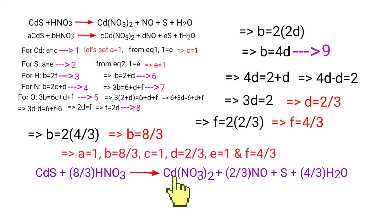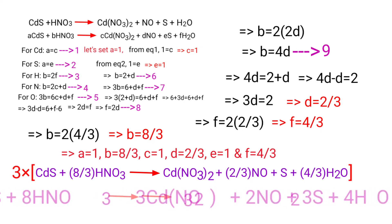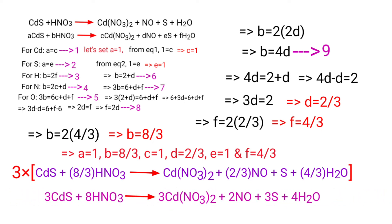The equation is now balanced. Multiply through by 3 to get whole number coefficients: 3CdS + 8HNO₃ → 3Cd(NO₃)₂ + 2NO + 3S + 4H₂O. The equation is now fully balanced.